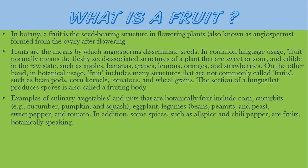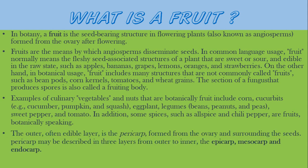What is a fruit? In botany, a fruit is the seed-bearing structure in flowering plants, also known as angiosperms, formed from the ovary after flowering. Fruits are the means by which angiosperms disseminate seeds.